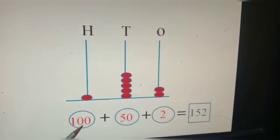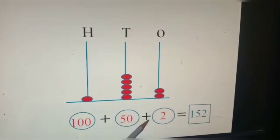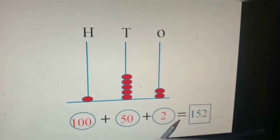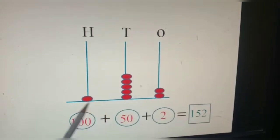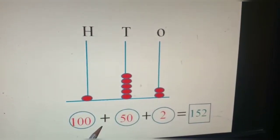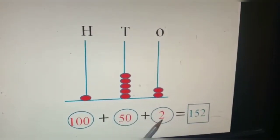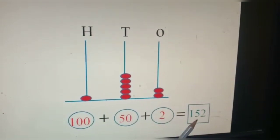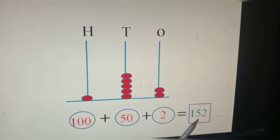Now, hundred plus fifty plus two is equal to hundred and fifty-two. Again, hundred plus fifty plus two is equal to hundred and fifty-two.